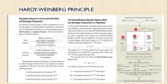To determine whether a population is in Hardy-Weinberg equilibrium, all the alleles for a given locus from individuals in a population are considered. Allele frequency is derived as the number of copies of a specific allele in a population divided by the total number of all alleles for that gene. Genotype frequency is derived as the number of individuals with a particular genotype divided by the total number of individuals in the population.